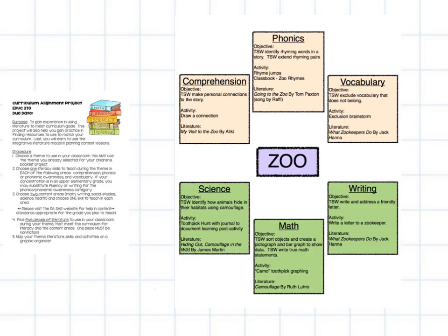And my activities are not given in detail. You can see for comprehension, they're drawing a story of their personal connection. That's all it says. For phonics, they're doing a game called Rhyming Jumps. And from this activity, we're going to get words from the story. And they're going to jump when they hear a rhyme. And then we're going to make our own class book called Zoo Rhymes.